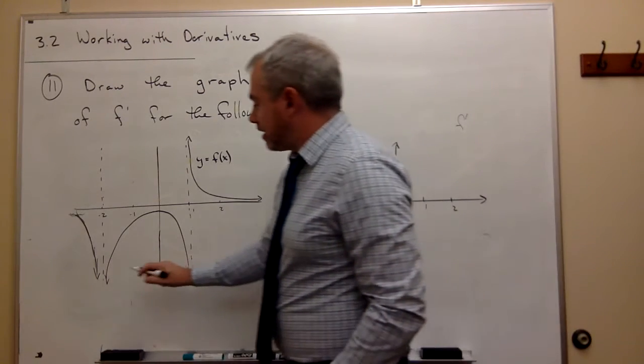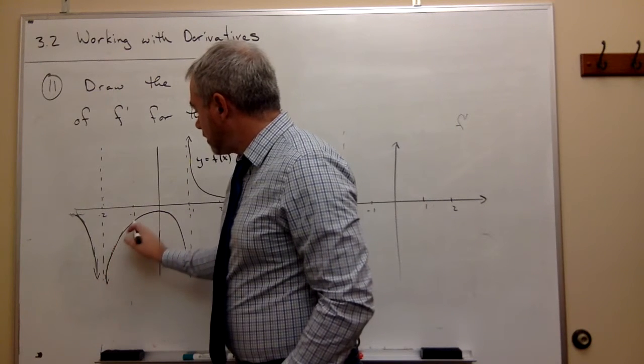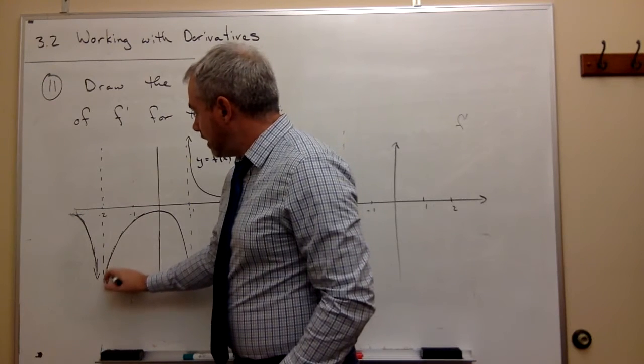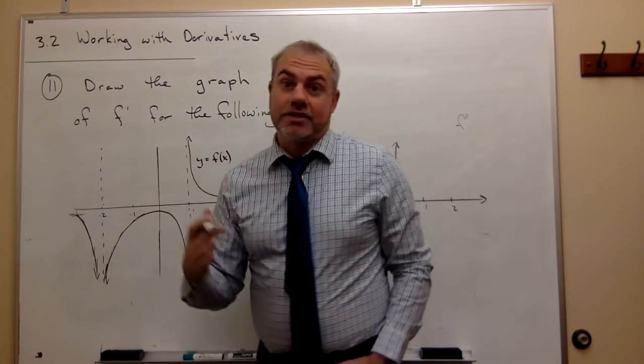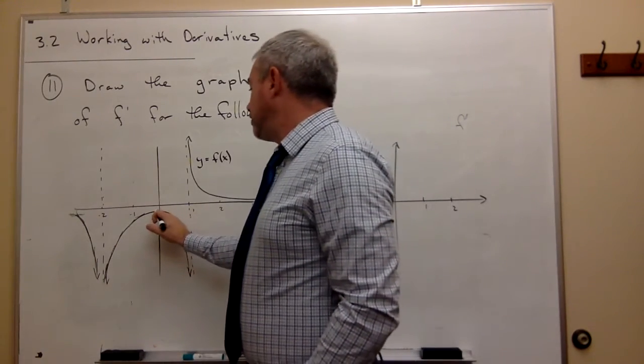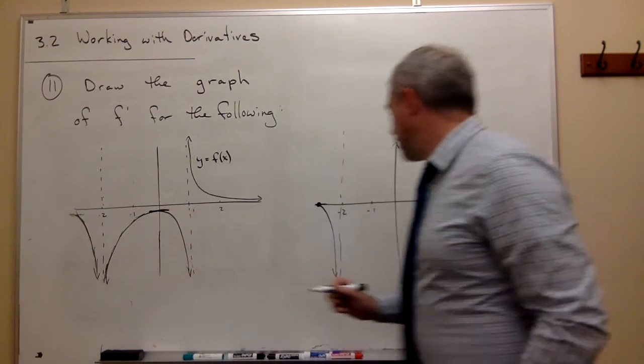As I get over here, I can see that these are very, very positive slopes, but they get less and less positive as I move away. So slopes near negative 2 are very, very positive, near infinity, in fact. And then they get less and less positive until eventually I get to about right here at 0, and the slope is 0.